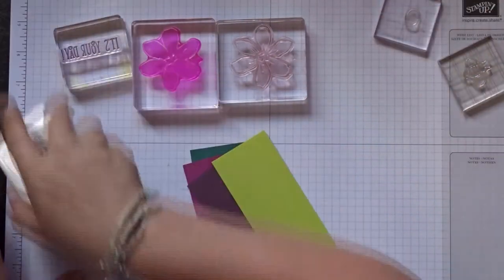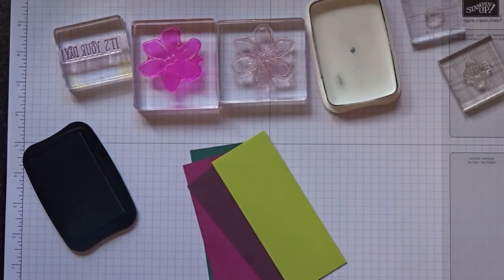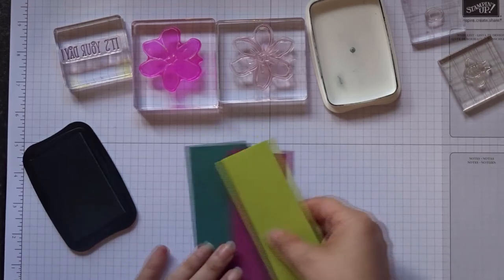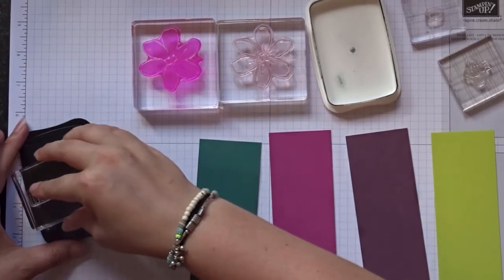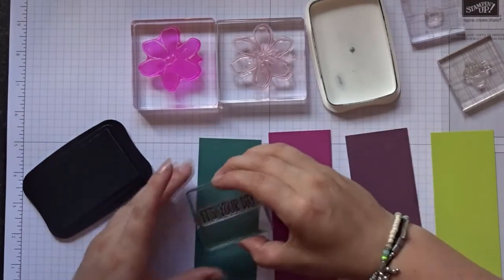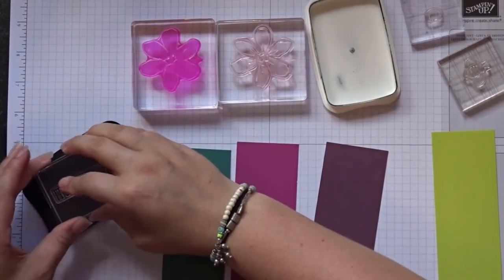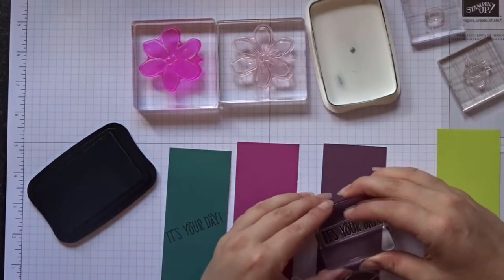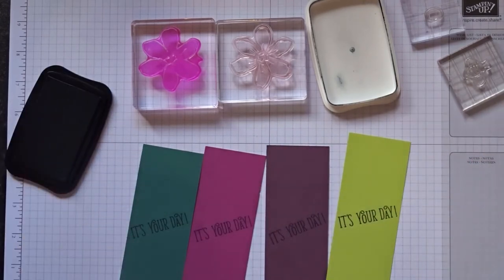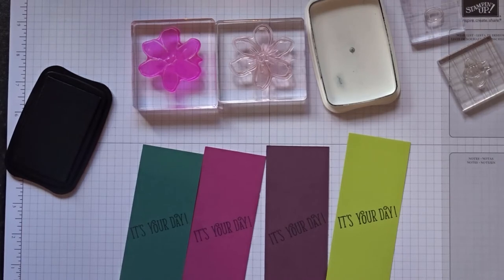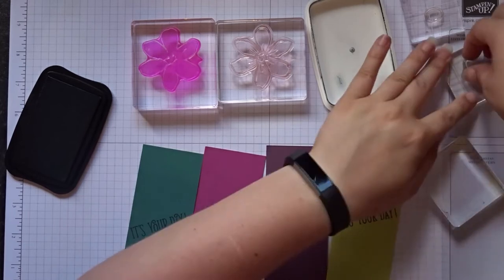We'll start off with doing all the black inks and we'll do the sentiment on all of them first. We'll do a bit of a conveyor belt I think. On each of them, as I've done in here, we're going to put the sentiment diagonally across it. I just think that adds a bit something extra. So I'm just using Tuxedo Memento. You could use your basic black, it's just this is the one I have handy. I'm going to put it at an angle and stamp. It doesn't have to be exactly the same on them all.